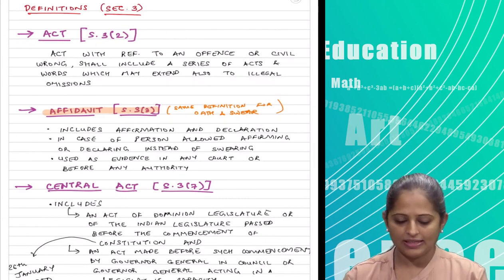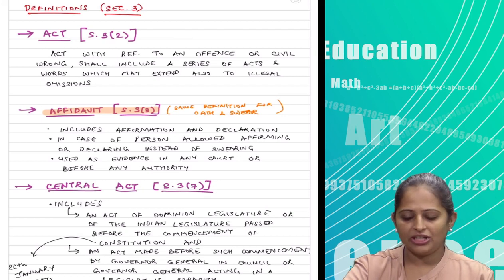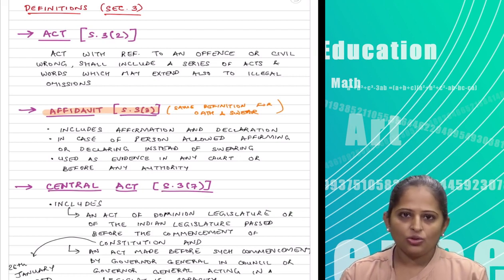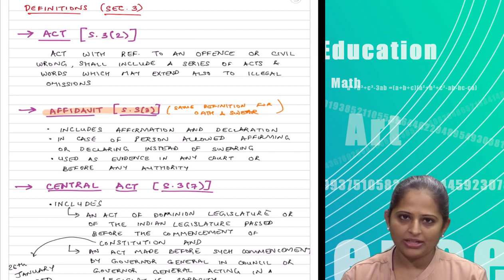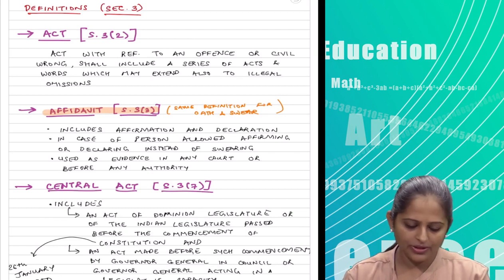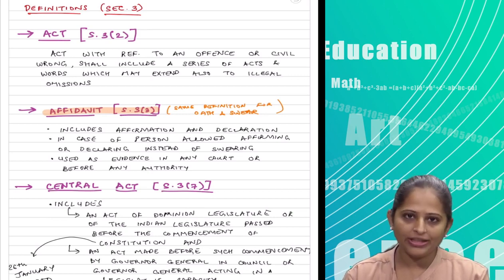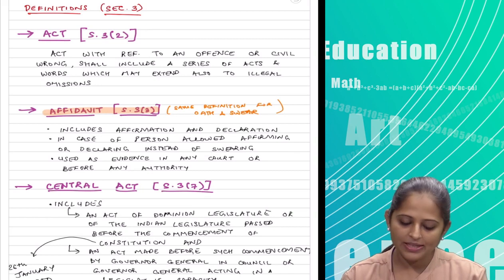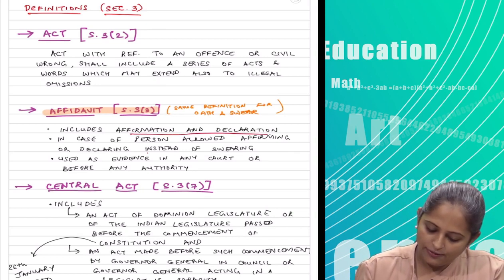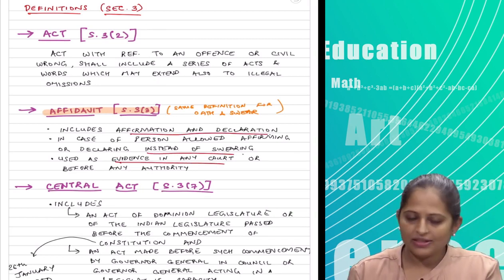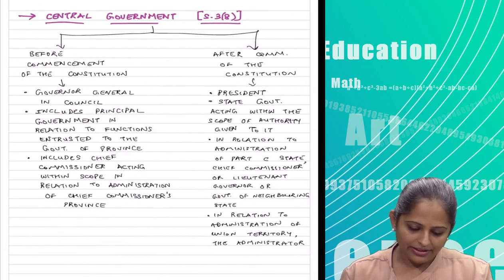Now we go to the definitions. Some have been asked in MCQs so it is good to go through them. The first definition is affidavit. The reason for covering it is that the definition for affidavit, oath, and swear is the same. So you are studying just one definition for three terms. It is basically giving an affirmation or declaration instead of swearing and can be used as evidence in the court of law.